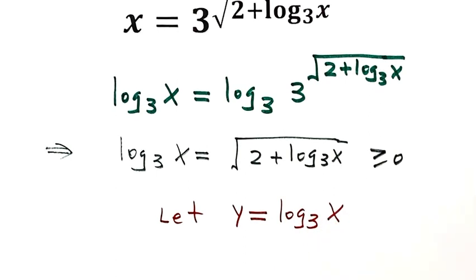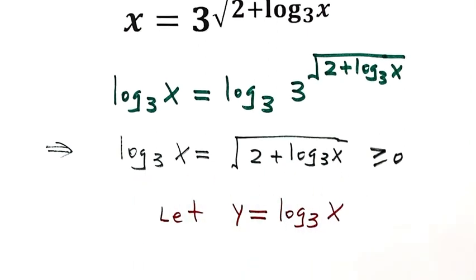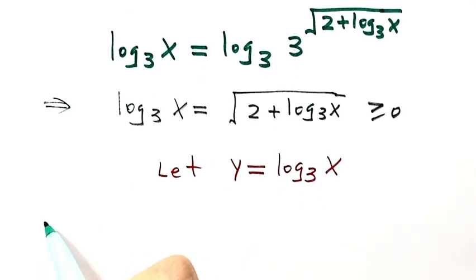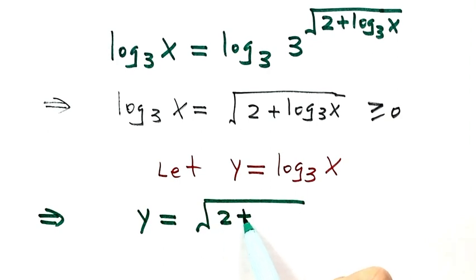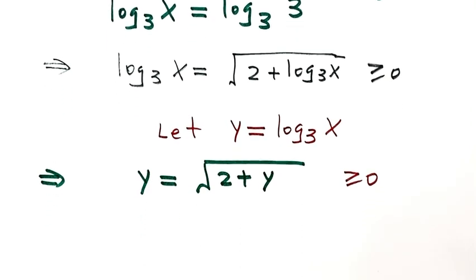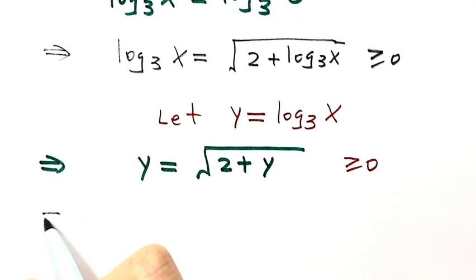Now let's do the substitution, using y to replace here and here. We have y equals square root of 2 plus y, where y is bigger than or equal to 0. Let's square both sides. Then y squared equals 2 plus y.